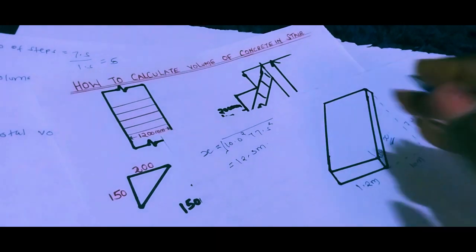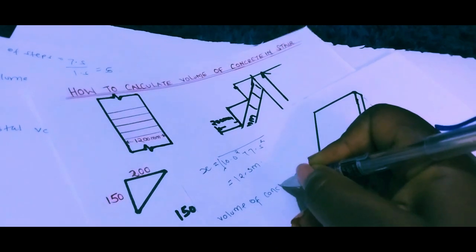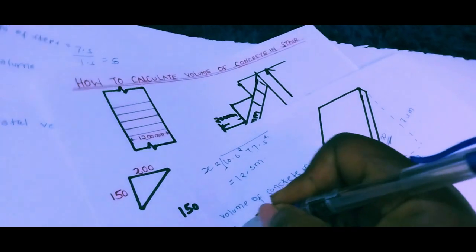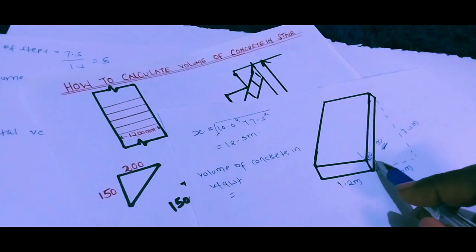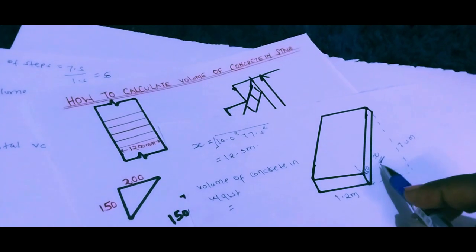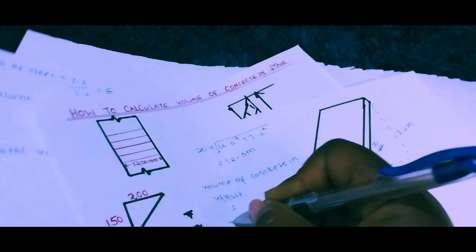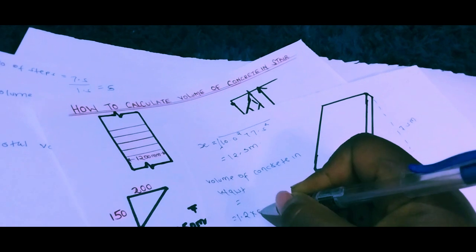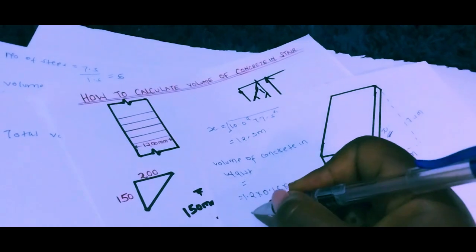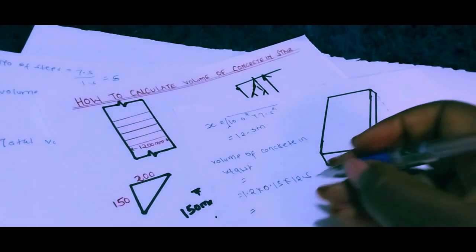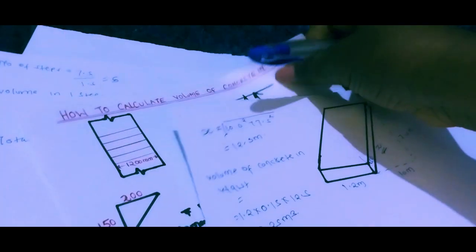Now we find the volume of concrete in the waist. The volume equals the width times the thickness times the length: 1.2 × 0.15 × 12.5. Tabulating that gives us 2.25 cubic meters.